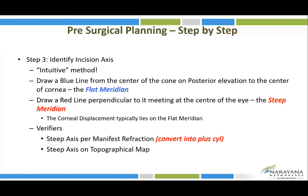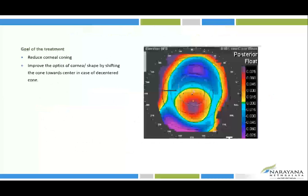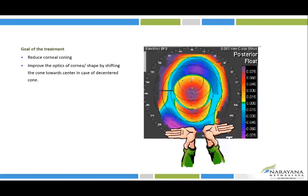The incision axis is identified by the integer method — identifying the flat and steep meridians of the cone and verifying with the axis of the steep K value on topography and the plus cylindrical form in subjective refraction. Intuitively, looking at the topography picture reveals where the cone is and the direction from which to push it, giving a good idea of the incision direction.